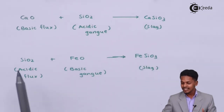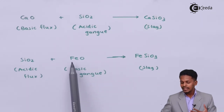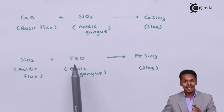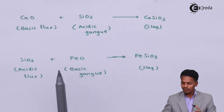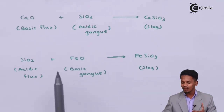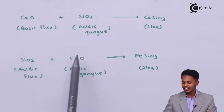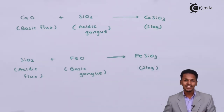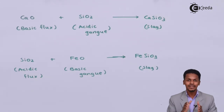In the other reaction — during the extraction of copper from copper pyrite — FeO is the gangue, which is basic in nature. To remove this basic gangue, we use an acidic flux: SiO2 acts as the acidic flux and reacts with FeO to form FeSiO3, which is removed as slag. These are the key terms related to flux and slag.